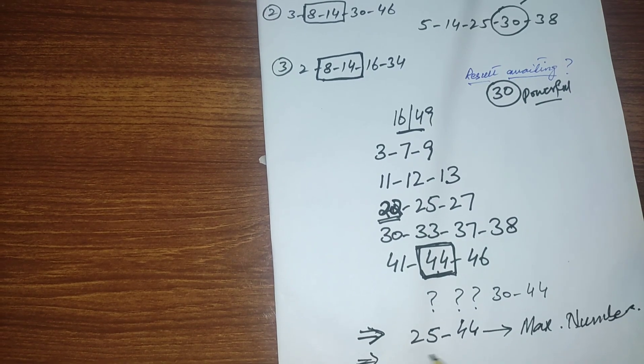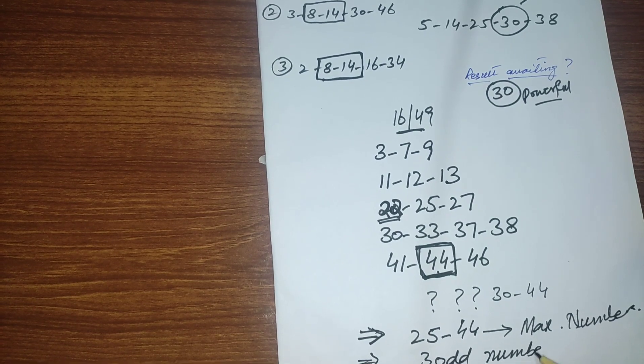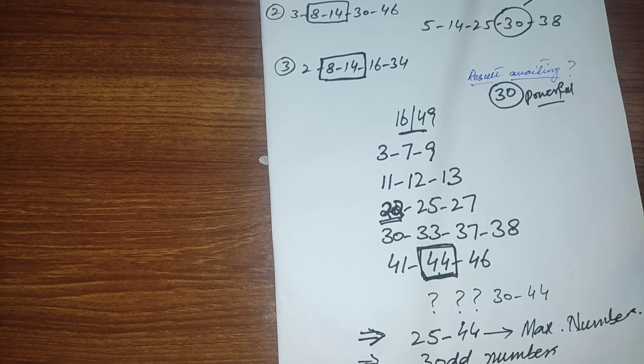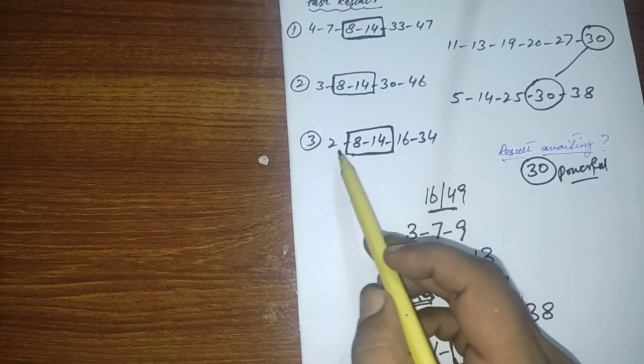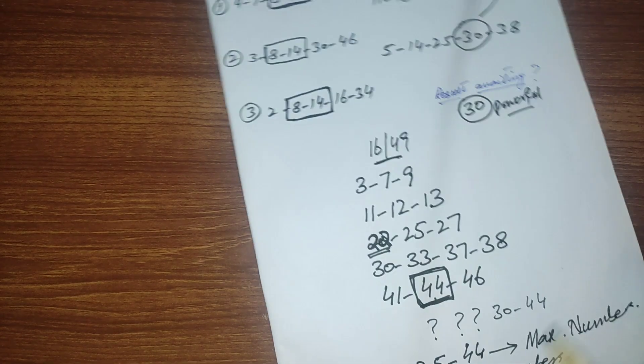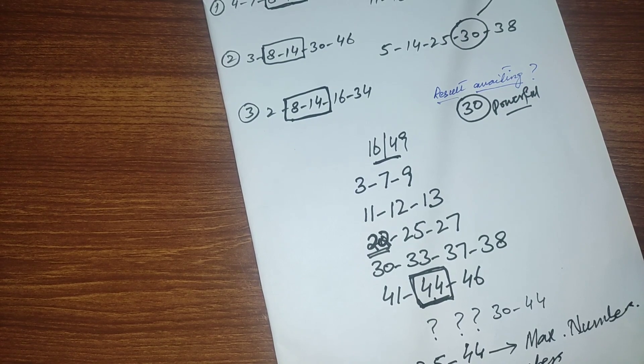You should select three odd numbers and two even numbers because you can see the previous result all numbers are even: 2, 8, 14, 16 and 34. Now there's less chance for even numbers to come. Maximum numbers will come in odd.